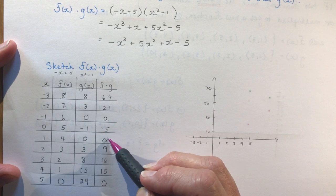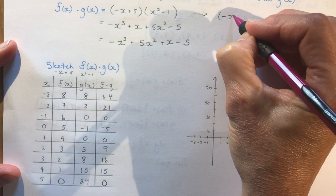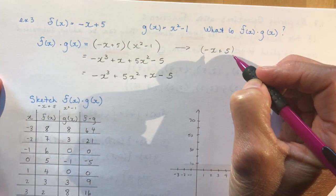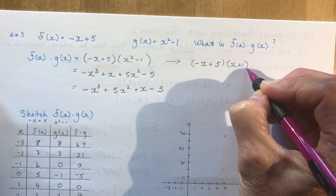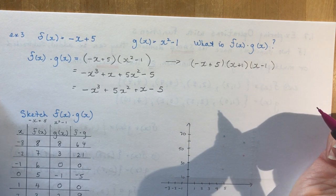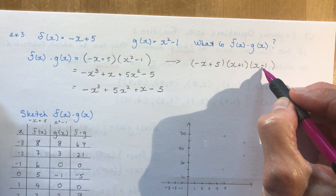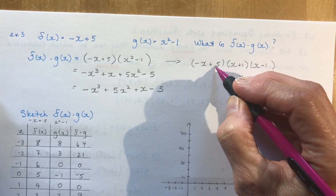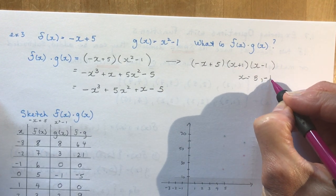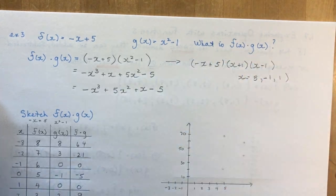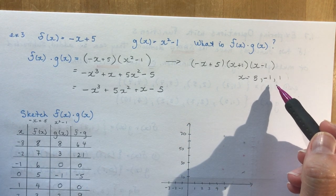You could also find the zeros by factoring: (-x + 5)(x² - 1) = (-x + 5)(x - 1)(x + 1). Setting each factor to zero gives zeros at x = 5, x = 1, and x = -1 — where the function crosses the x-axis. This is useful when sketching cubic functions.